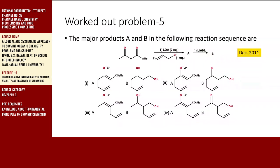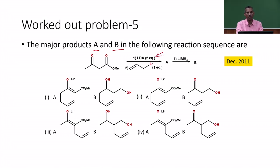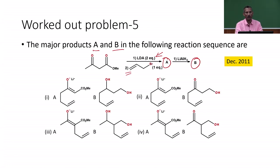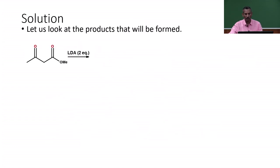Problem 5 (December 2011) asks for major products A and B in a reaction sequence: methyl acetoacetate is treated with two equivalents of LDA, then one equivalent of allyl bromide to give intermediate A, which is further reduced by lithium aluminum hydride to give compound B. Four different combinations of products are provided.